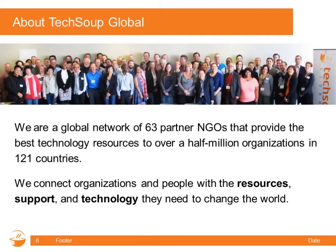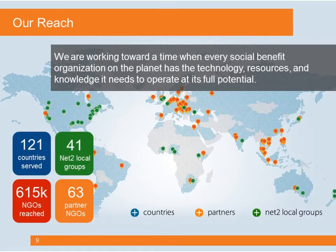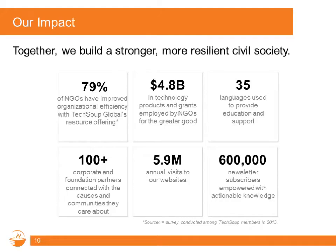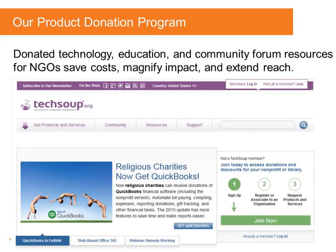A little bit about TechSoup: we are a global network of 63 partners serving technology resources and knowledge in more than 120 countries. We deliver technology donations through partners — companies like Intuit that provides QuickBooks — to nonprofits and social do-gooders around the world. We have now served nearly $5 billion in technology products and grants to the social benefit sector. You can learn more at TechSoup.org.